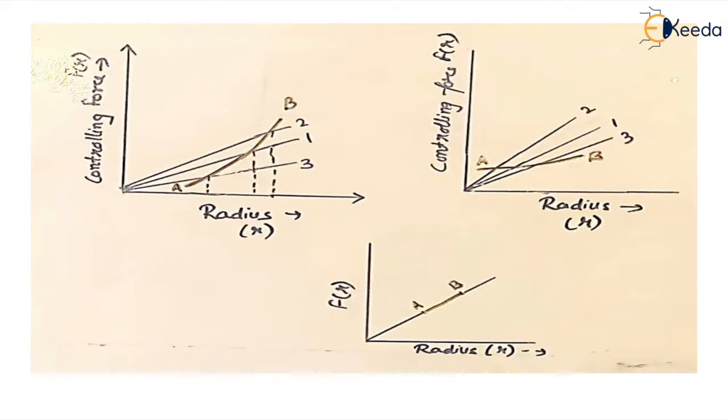We'll understand this concept with the help of graphs. We have plotted controlling force on the y-axis and radius of rotation on the x-axis. The controlling force is equal to centrifugal force, which is mr omega square, therefore controlling force is a function of radius. This AB curve is the controlling curve, the curve that we plot between controlling force and radius.